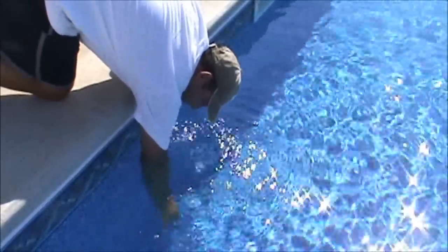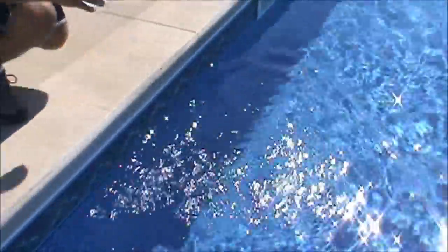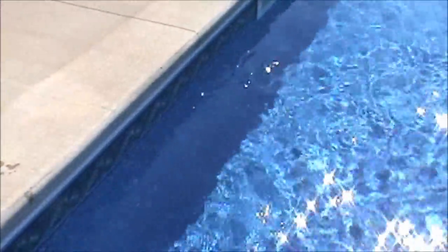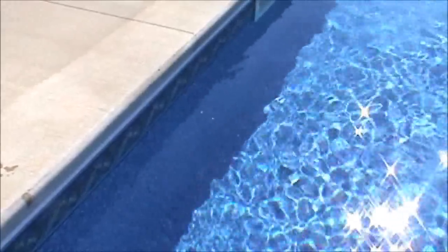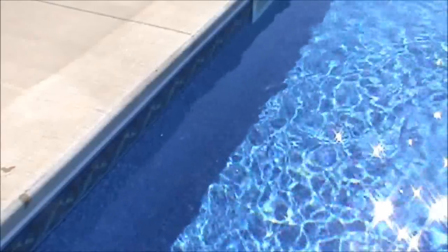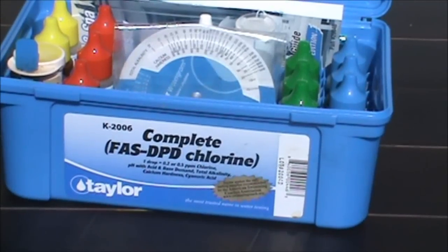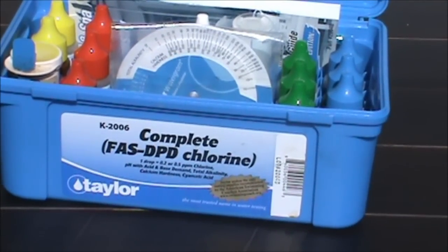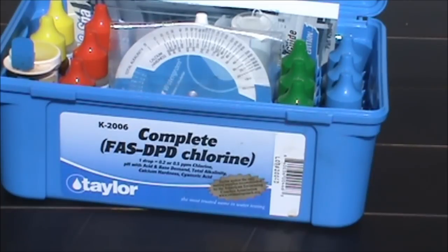Let the bubbles out by tilting the bottle. That'll fill your bottle with water. Once it's filled, you have a good sample. You want to wait at least 45 minutes after the skimmer's been running so that the water is all mixed up and you get a true sample. Today we're using the Taylor K-2006 Complete FAS-DPD Chlorine Test Kit.